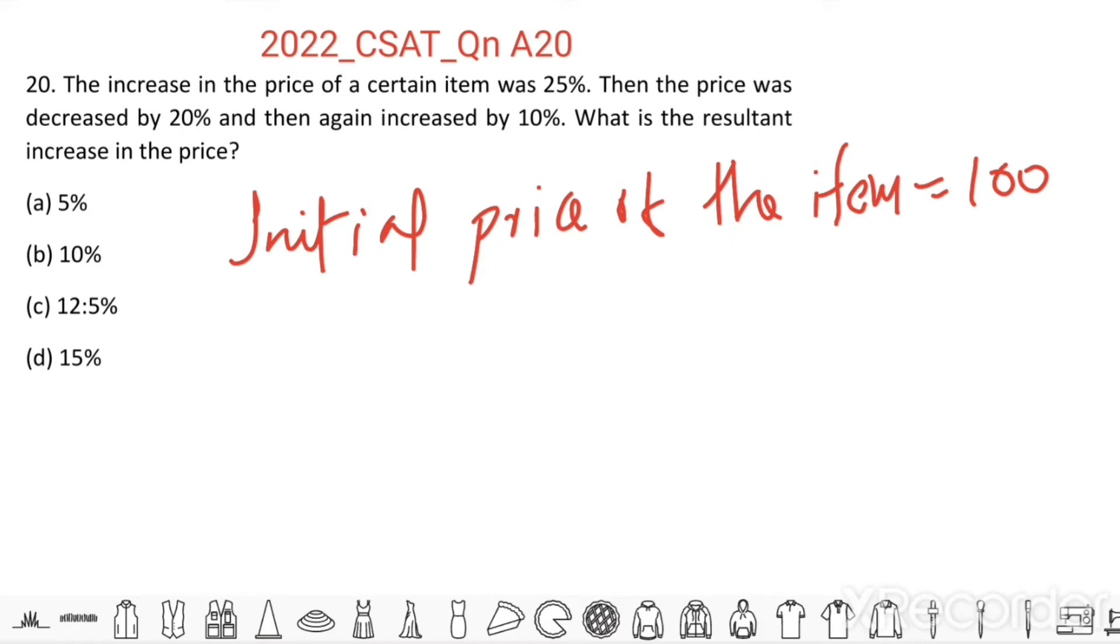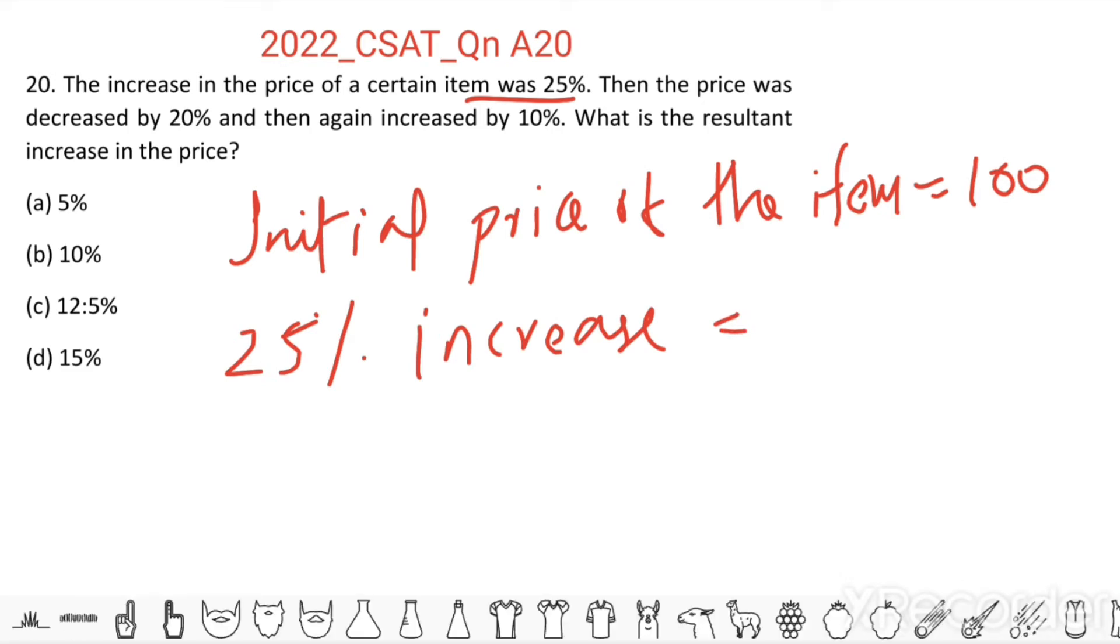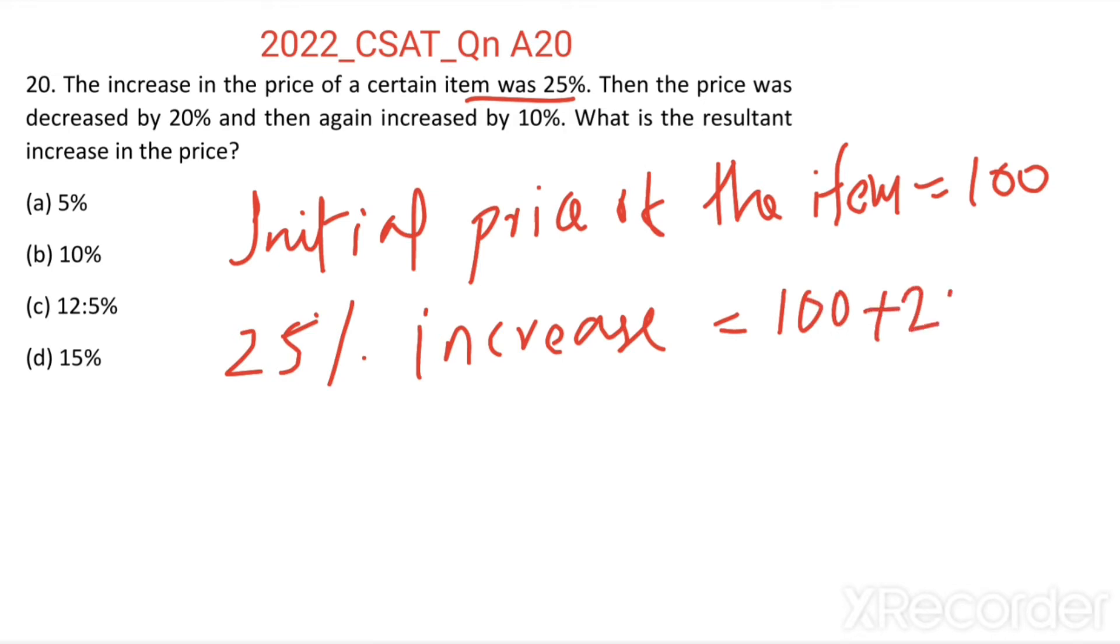Then the price of the item is increased by 25%. 25% increase. 25% of 100 equal to 25. Then the resultant equal to 100 plus 25 equal to 125 rupees.